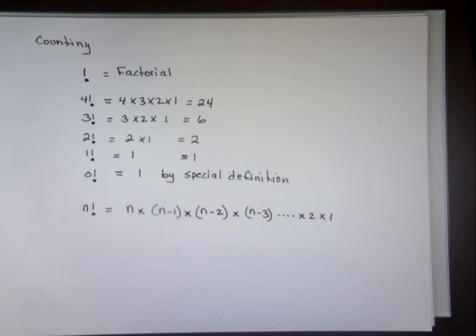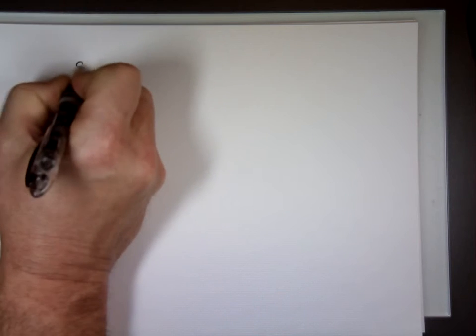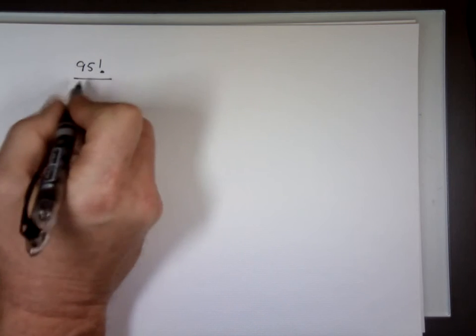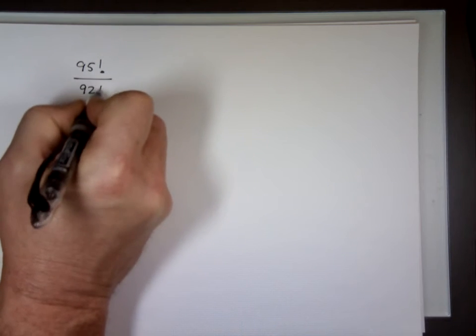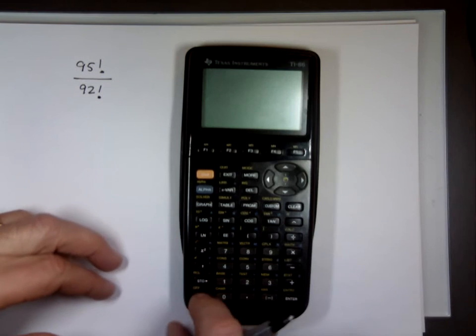Now, just to do some math here, just to make sure you understand that. If somebody said to you, can you give me 95 factorial divided by 92 factorial? Wait a second, I can go to my calculator and push the buttons. Well, we have a little problem there.